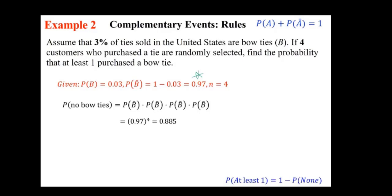So probability of at least 1 bow tie would be probability that is calculated as 1 minus the probability of none, 1 minus the probability of no bow ties.